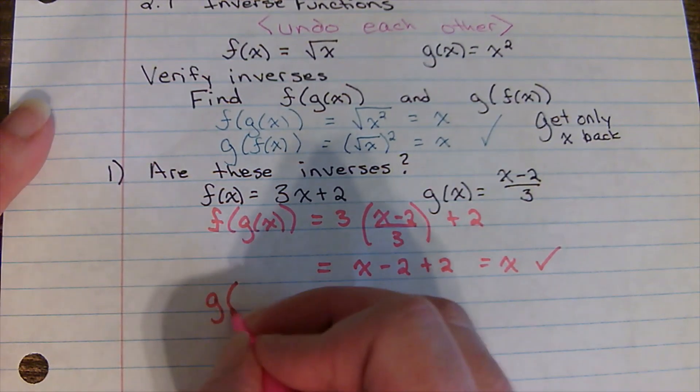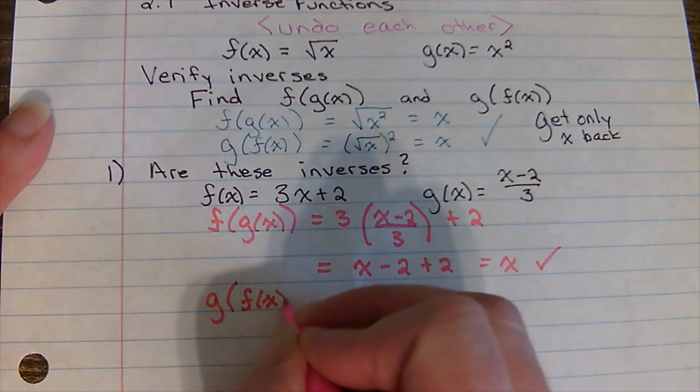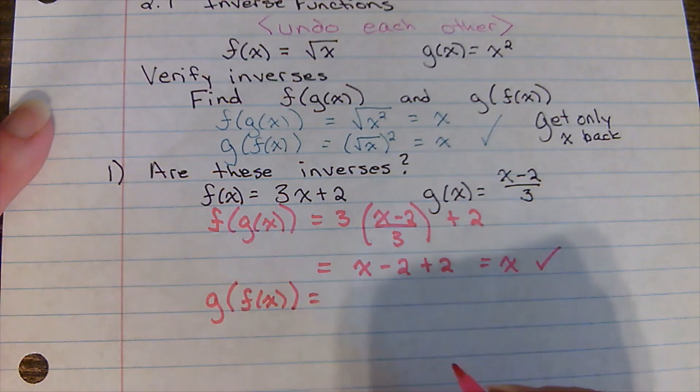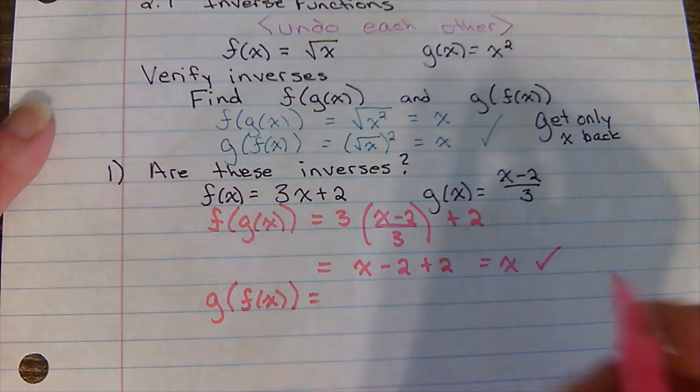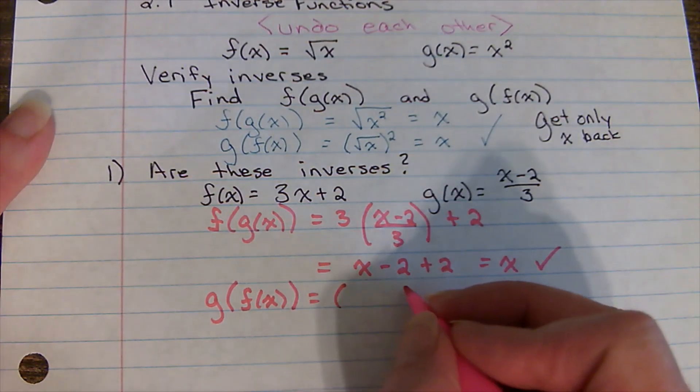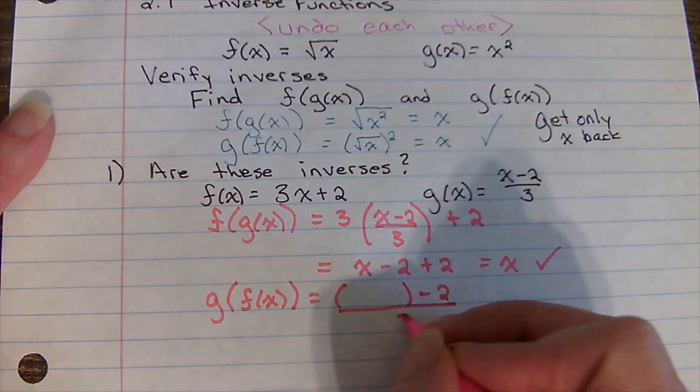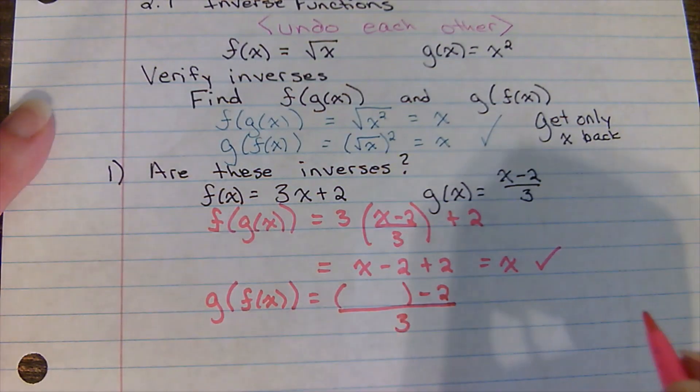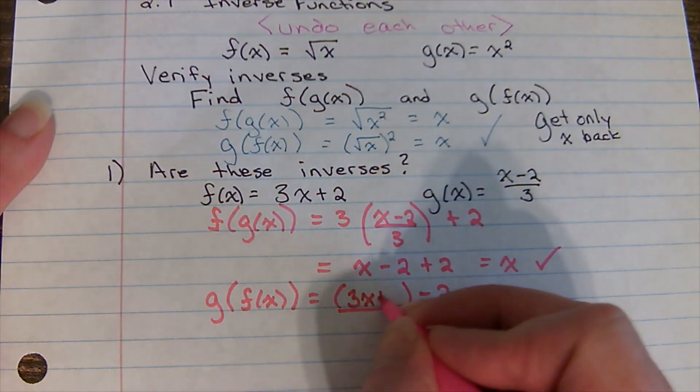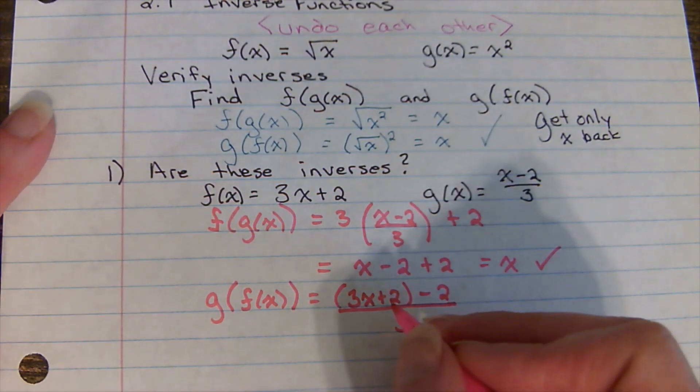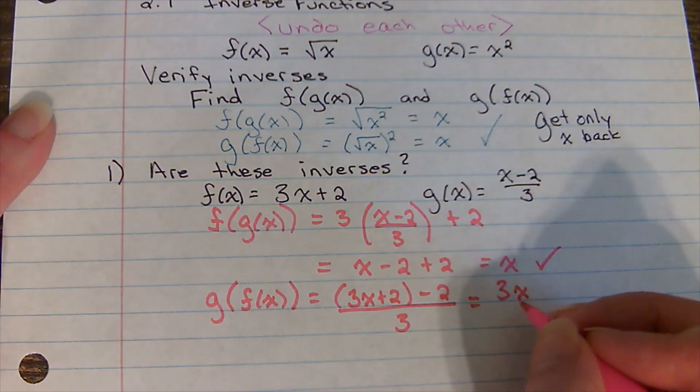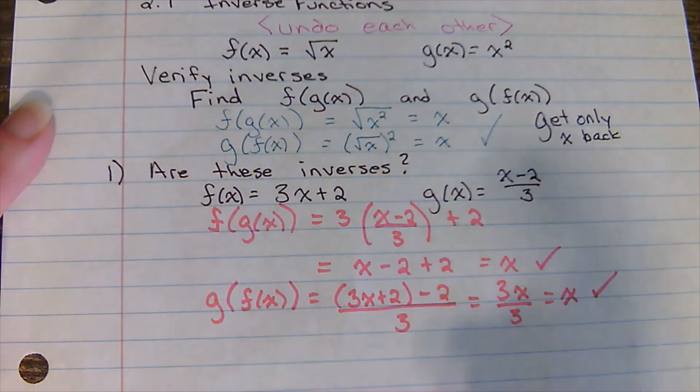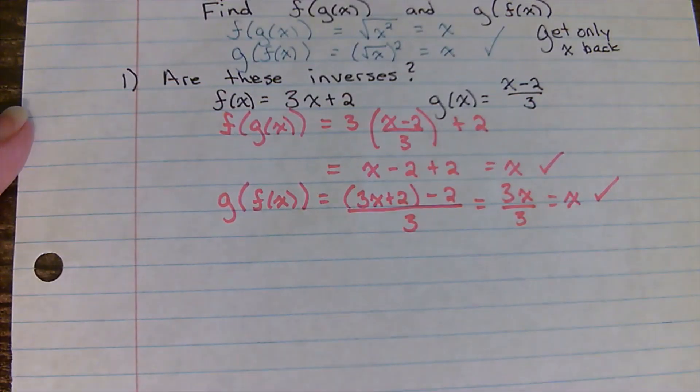Let's check the other direction. In the other direction, I have g, which is something minus two over three. So something minus two over three. And what's going in place where x was is f of x, three x plus two. So I have three x plus two minus two. That leaves me three x over three, which simplifies to x. The functions are inverses.